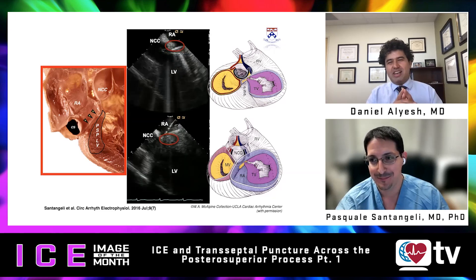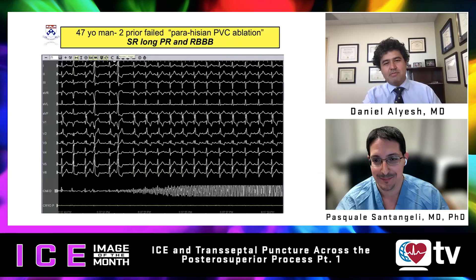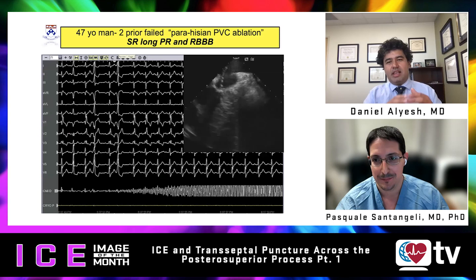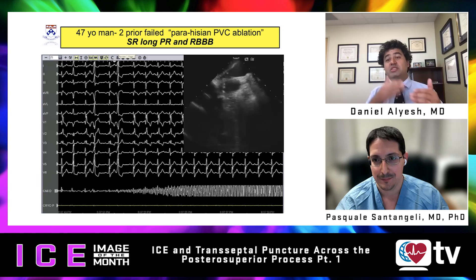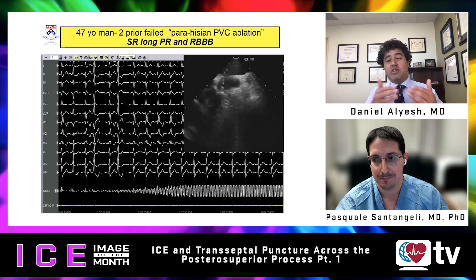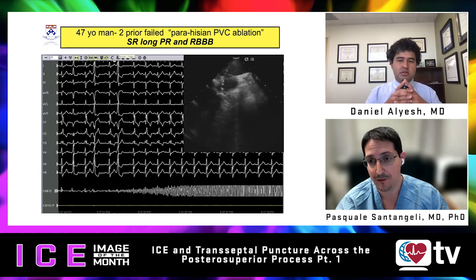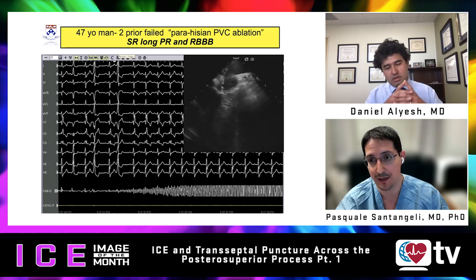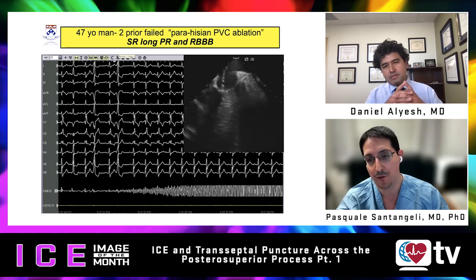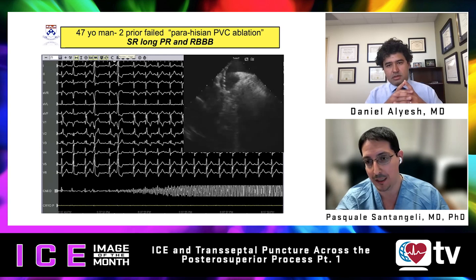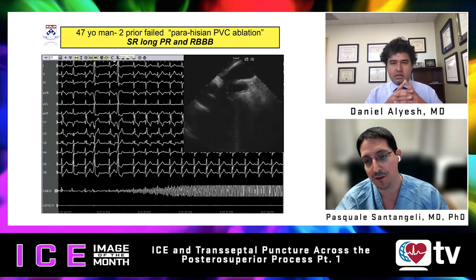In another example case, it appears the catheter is accessing the PSP from the coronary sinus, but actually it is slightly outside the coronary sinus. Occasionally during the heartbeat, the valve at the ostium of the coronary sinus comes into view, confirming the catheter is just outside it.